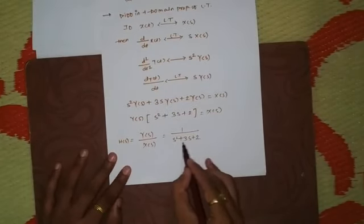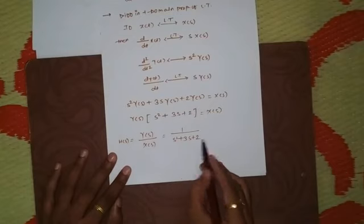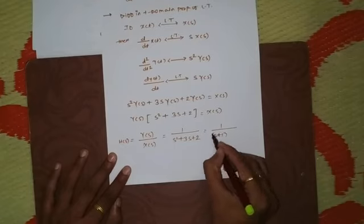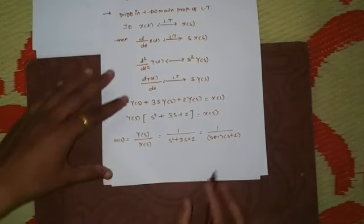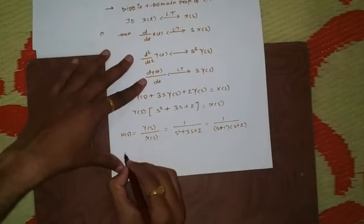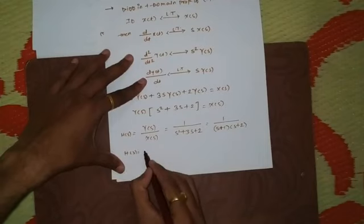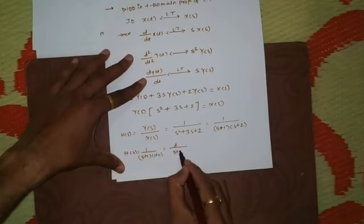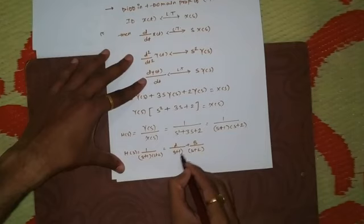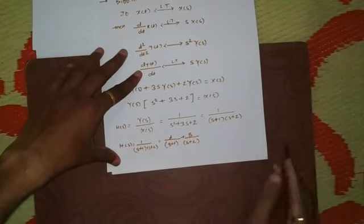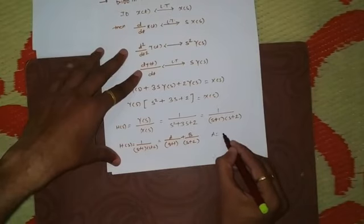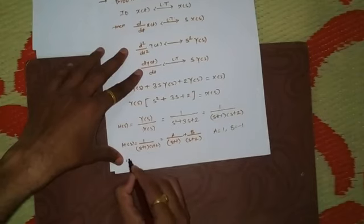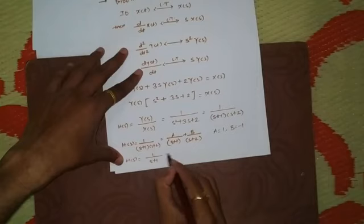To obtain its inverse, we'll factorize using the quadratic equation: H(s) = 1/[(s+1)(s+2)]. Applying partial fraction expansion: 1/[(s+1)(s+2)] = A/(s+1) + B/(s+2). The values are A = 1 and B = −1, so H(s) = 1/(s+1) − 1/(s+2).